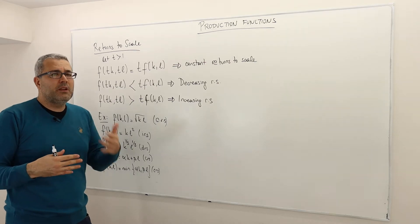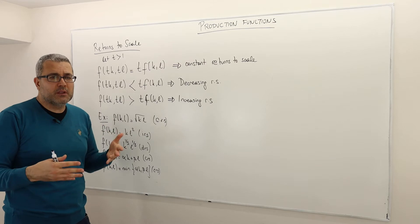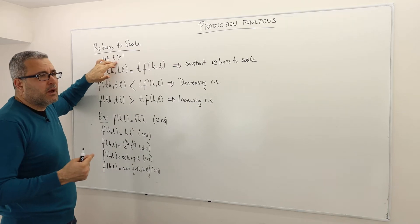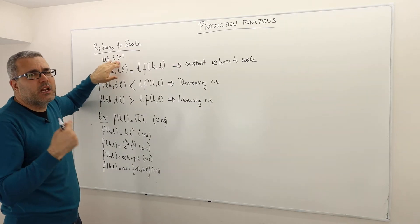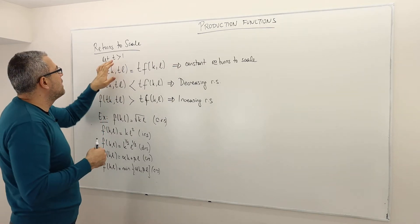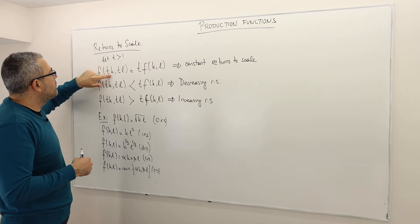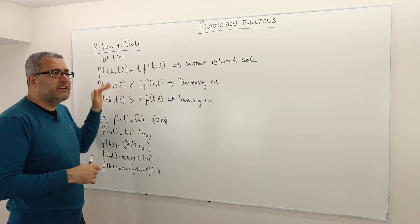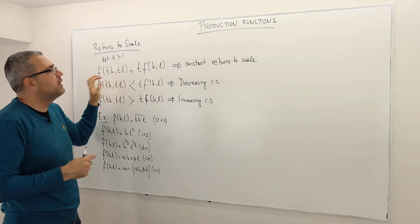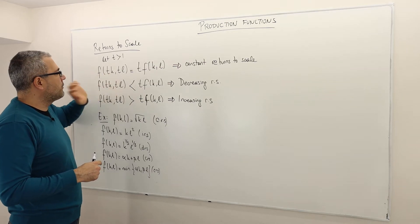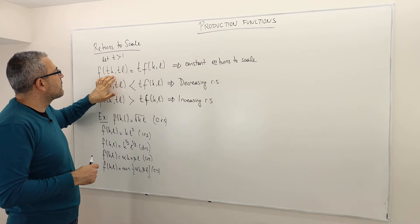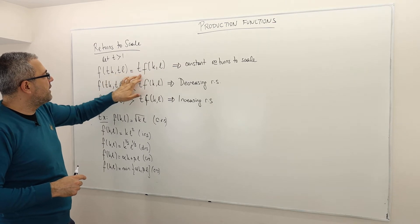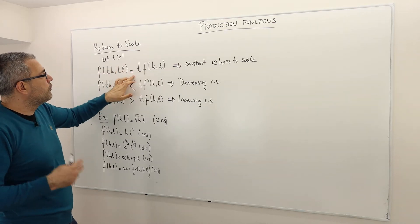Doubling is nothing special — what if I triple or quadruple them? Basically, let's suppose I multiply my inputs by some t, where t is greater than one. So I'm using more inputs. I'll define this concept for the two-input case: I multiply both inputs by t.